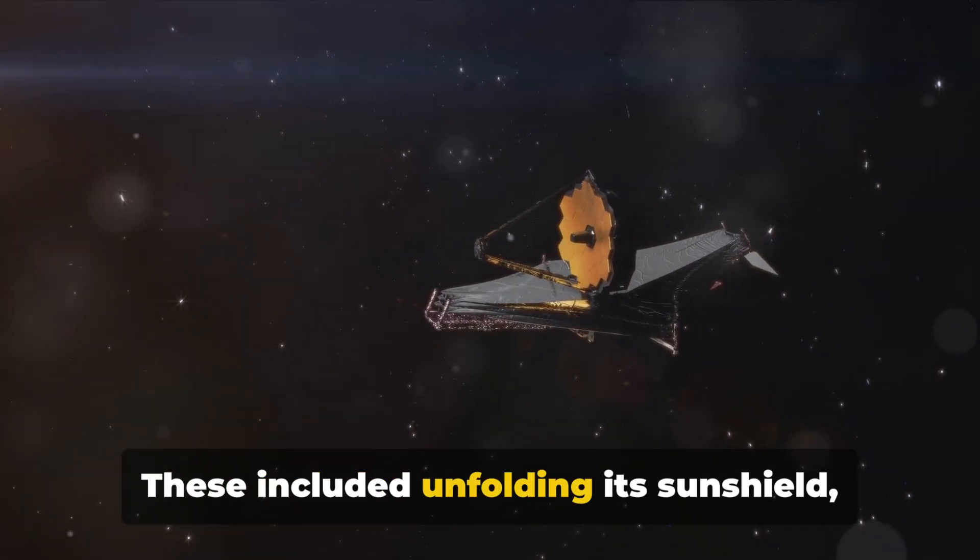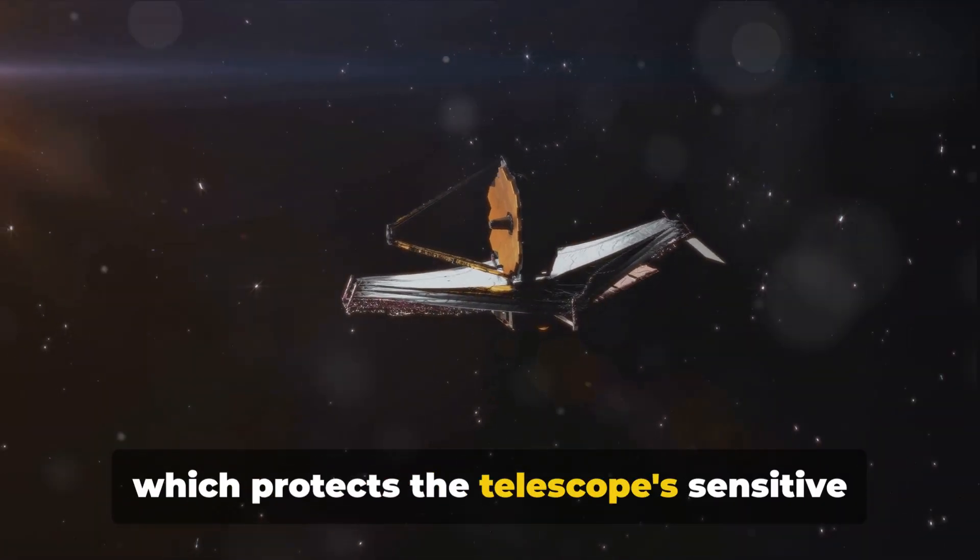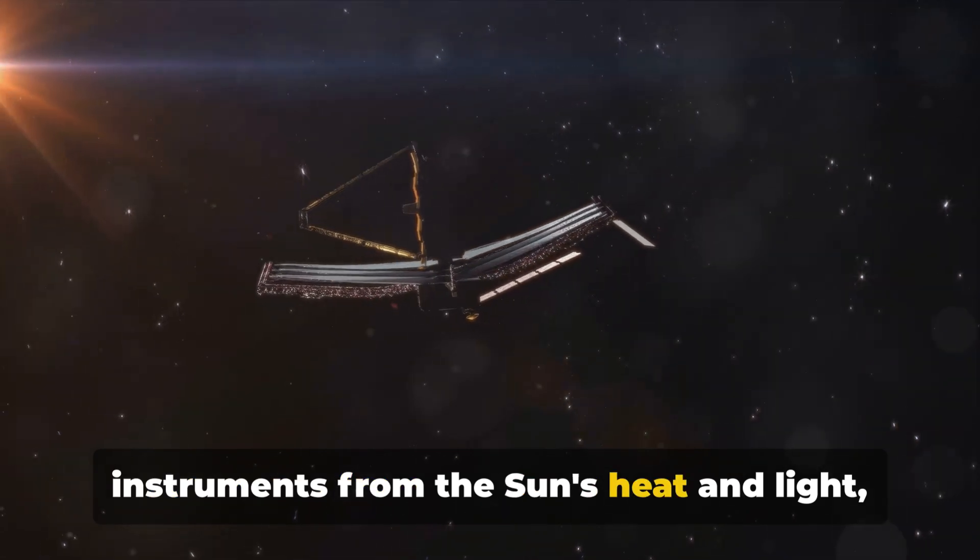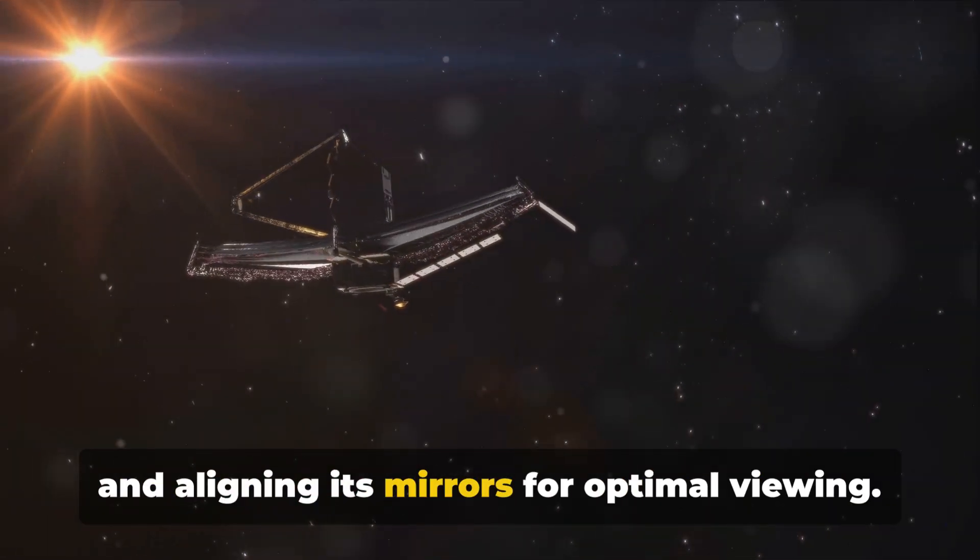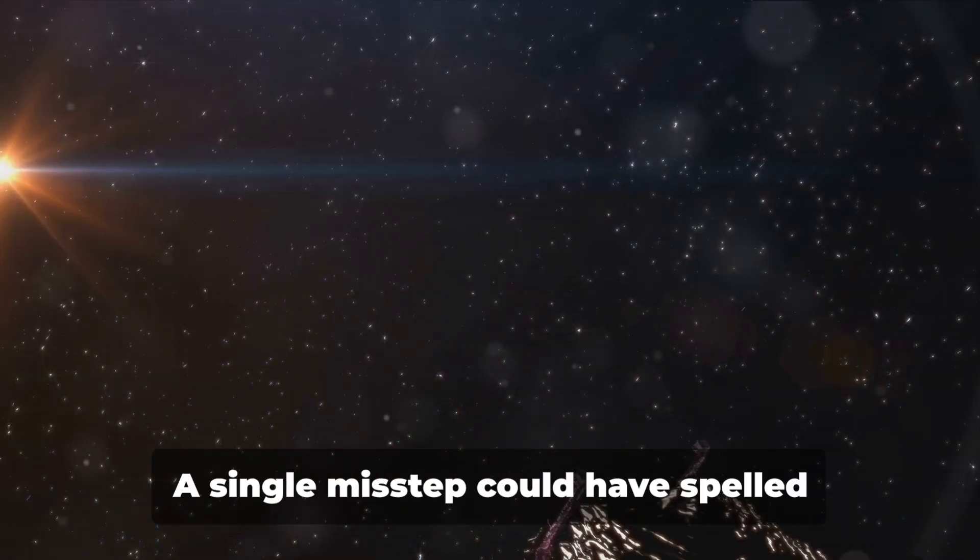These included unfolding its sunshield, which protects the telescope's sensitive instruments from the Sun's heat and light, and aligning its mirrors for optimal viewing. The journey was not without risks.